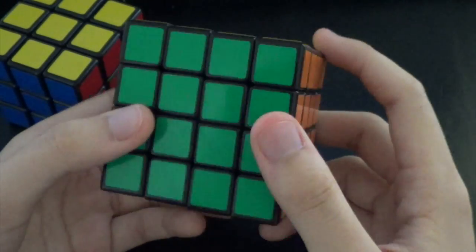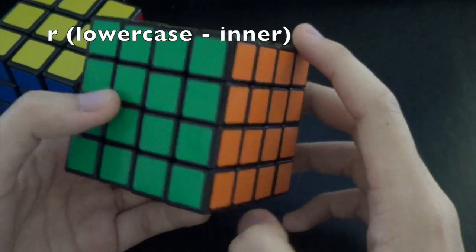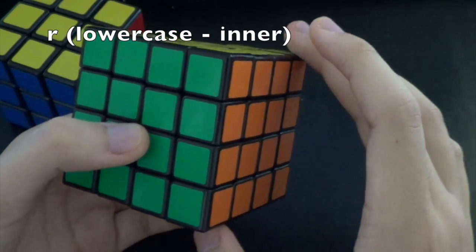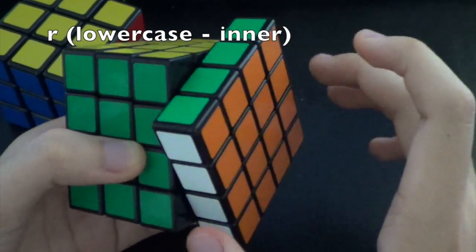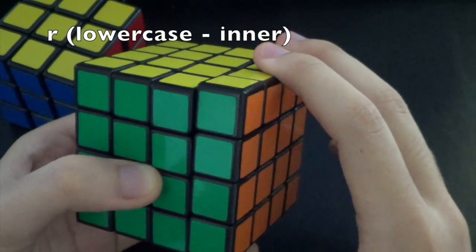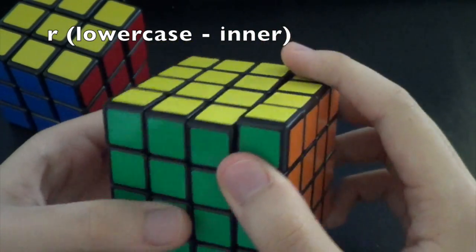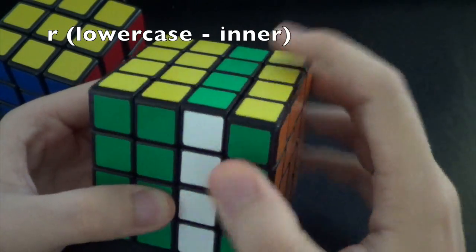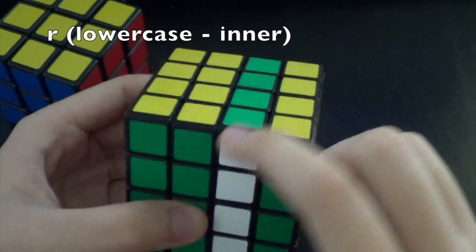And then a lowercase face letter, such as lowercase r, instead of the uppercase r, which means the outer layer is turned, it's the inner layer that goes clockwise 90 degrees.